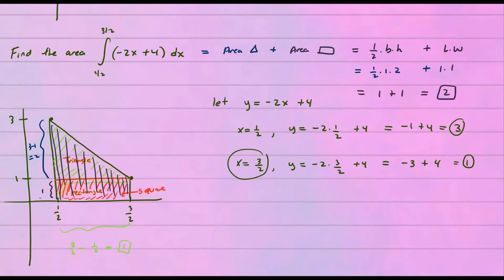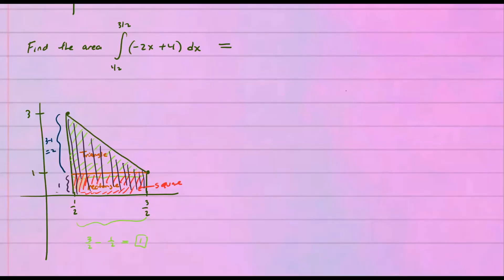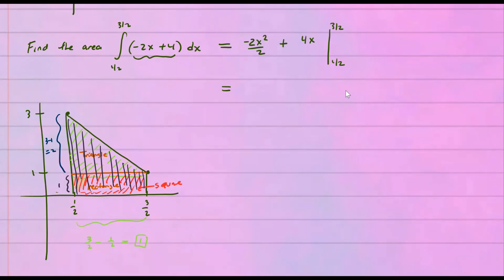Now let's see if we can do it using the antiderivative. We'll use the power rule to integrate this function and then plug in the upper and lower limits using the Fundamental Theorem of Calculus. Integrating −2x gives −2x²/2, and integrating 4 gives 4x, so we have −x² + 4x, evaluated from one-half to three-halves. The Fundamental Theorem of Calculus says we plug in the upper limit and subtract the lower limit.